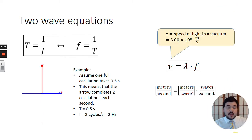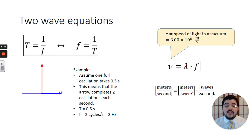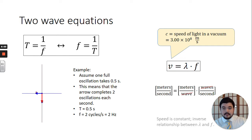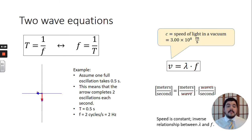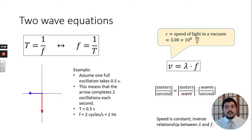For electromagnetic waves — the waves we will be studying for optics — the speed in a vacuum is represented by the letter C, and it's 300 million meters per second, or 3.00 × 10⁸ m/s. The speed of light in a vacuum does not change, so there is an inverse relationship between wavelength and frequency: bigger wavelength means lower frequency, and higher frequency means smaller wavelength.